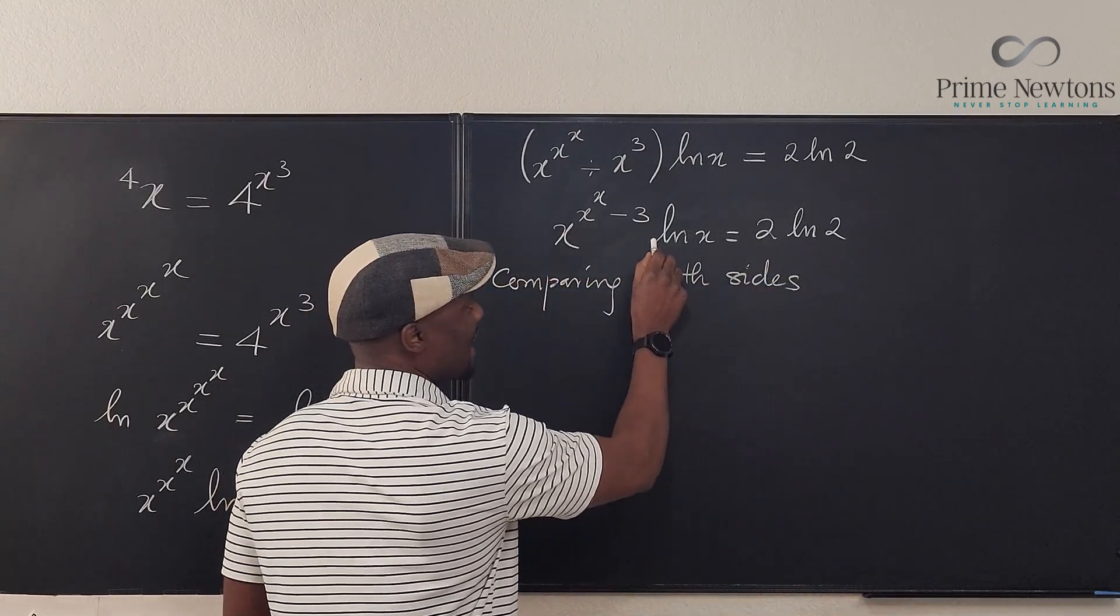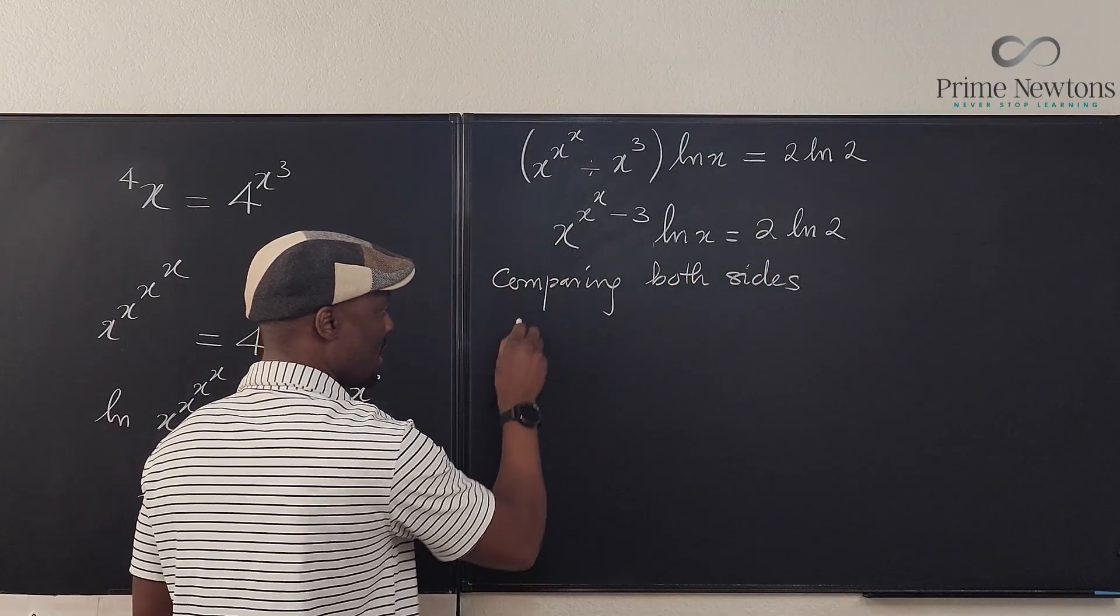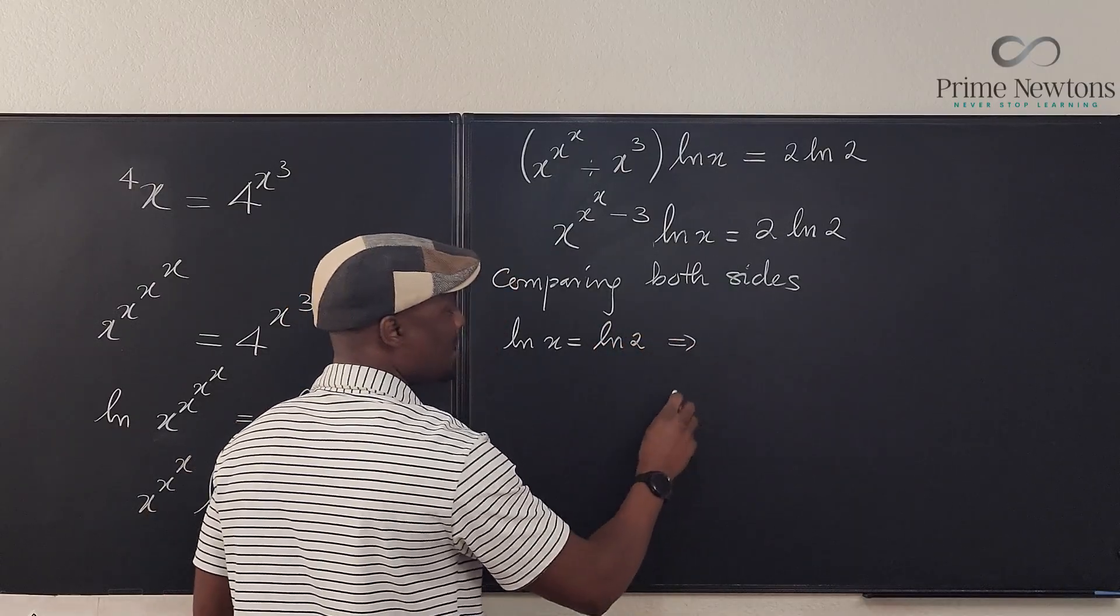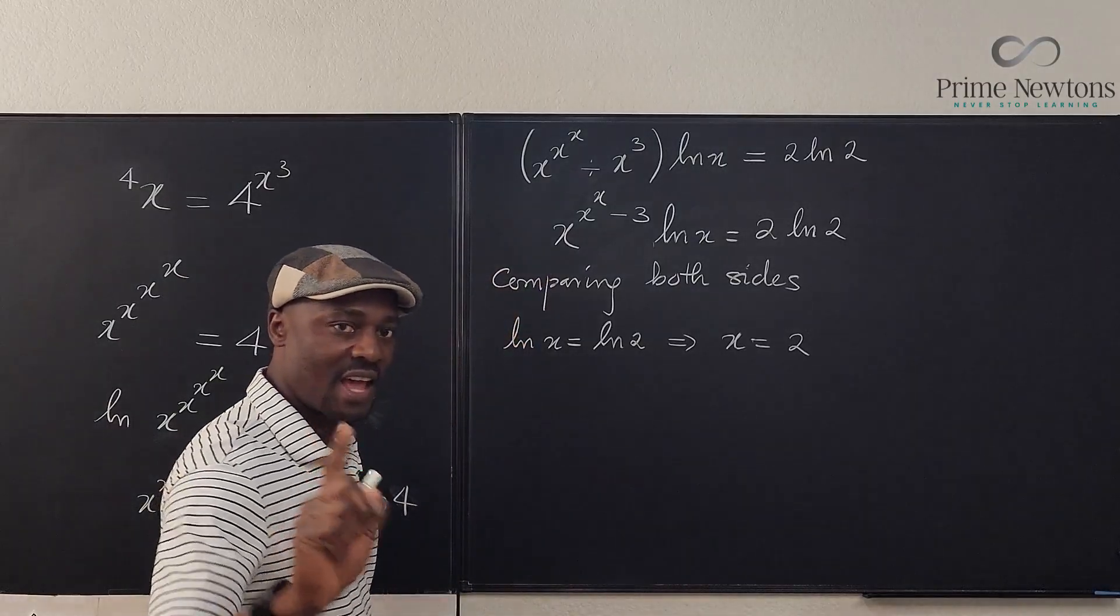So what I did was I said let the natural log of x be natural log of 2. So the natural log of x equals natural log of 2, which implies that x is equal to 2.